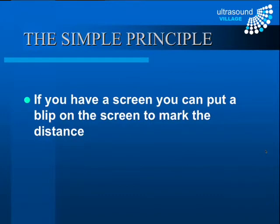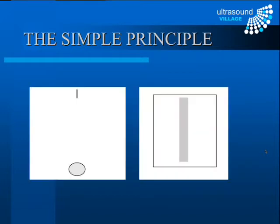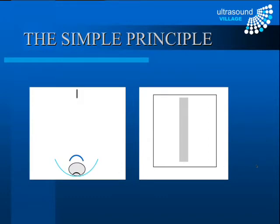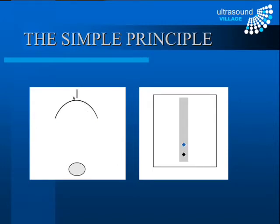If we have a screen, we can put a blip on it to mark out that distance. We send out a sound wave; it travels through the medium, hits the object, and a reflection is generated, but most of the energy continues on until it hits the far edge of the object. Another reflection is generated, and these two reflections travel back to the transducer. When the first reflection arrives, the machine puts a blip on the screen; a short time later the second reflection arrives and produces another blip a little further down.